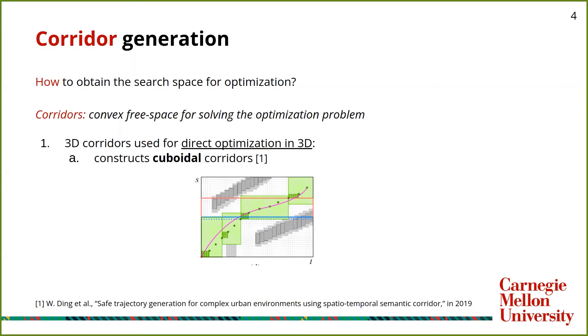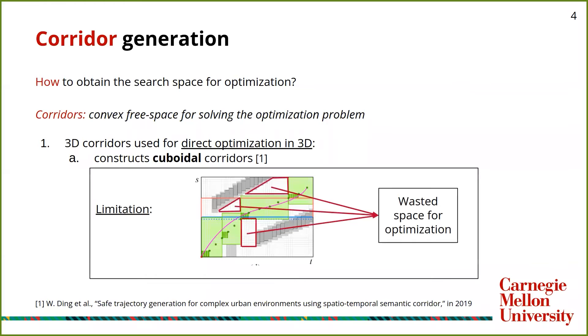Typically, cuboidal or rectangular corridors have been researched before, but as we can see from the figure here, there's a lot of wastage of free space in this, and we fail to generate a comfort optimal trajectory.